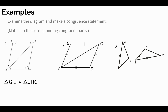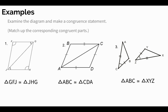Hopefully for number one you got something like triangle GFJ congruent to triangle JHG. For number two, I got triangle ABC congruent to triangle CDA. For number three, I got triangle ABC congruent to triangle XYZ. Now, are these the only correct answers? No — these are just one correct answer for each problem. You could have gotten three totally different answers and also be correct.